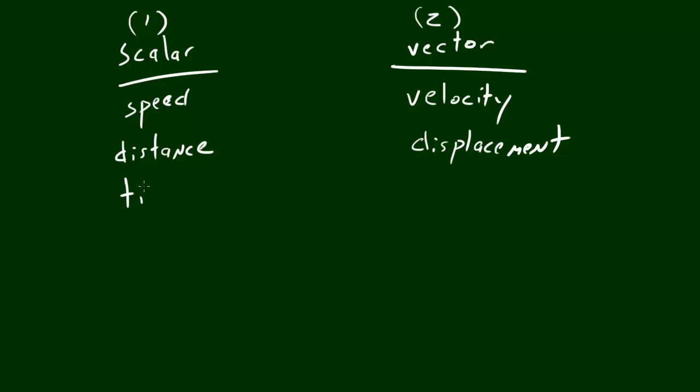So some other things that are scalar and vector, time, for example, would be scalar because you can't say two hours east. That doesn't make sense. And I can't even think of some vector ones right now, but later on we're going to be talking about vector and scalar quantities, and that's what I'm going to refer to. Whenever I say that speed is a scalar quantity or displacement is a vector quantity, just remember that.